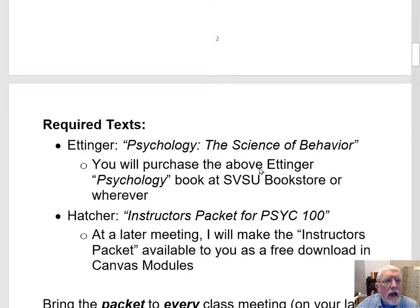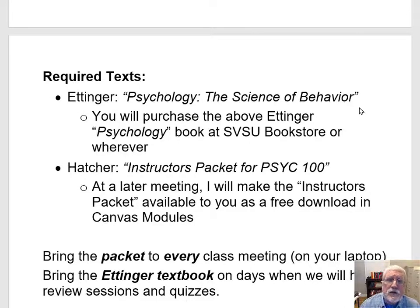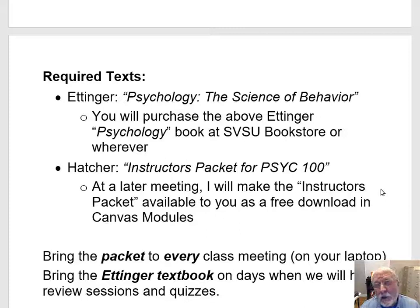Speaking of the class and the way I teach it — the main required text is R.H. Ettinger's textbook, Psychology: The Science of Behavior. You will purchase this at the SVSU bookstore, Amazon.com, or wherever you choose. The other item we'll use is Hatcher's Instructor's Pocket for Psych 100 — a collection of handouts, discussion exercises, and drawings I've done to illustrate various concepts. You don't need to buy that at the bookstore.